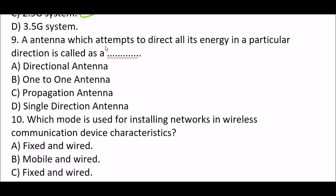Next question: An antenna which attempts to direct all its energy in a particular direction is called a blank. Option A: directional antenna. Option B: 1-to-1 antenna. Option C: propagation antenna. Option D: single direction antenna. The right answer is Option A, directional antenna. An antenna which attempts to direct all its energy in a particular direction is called a directional antenna.